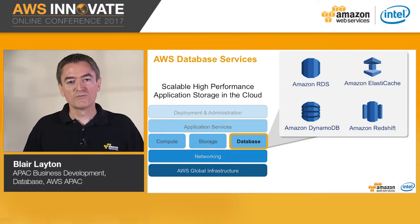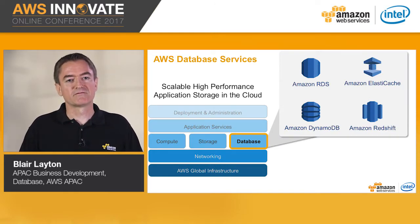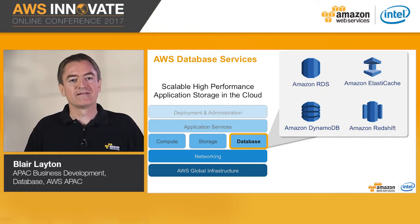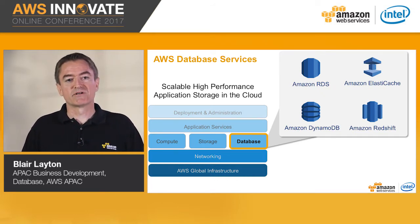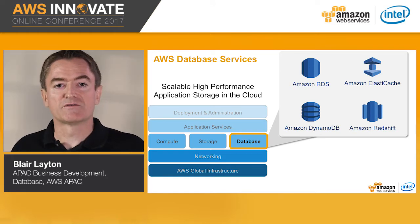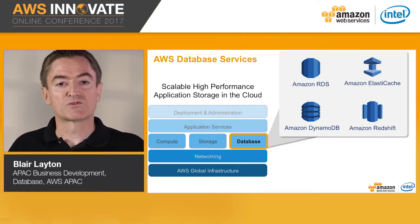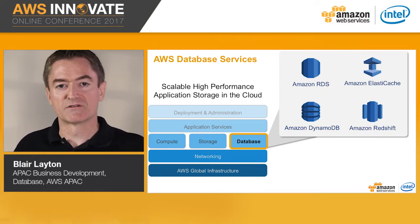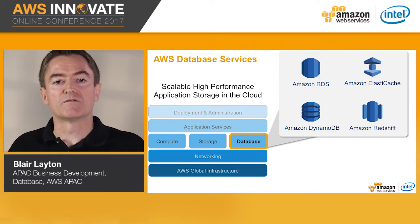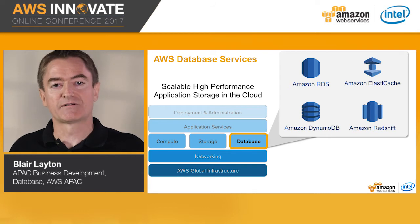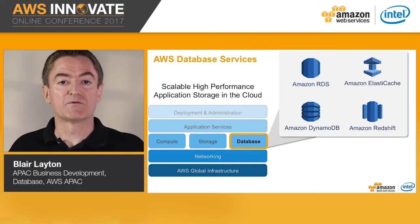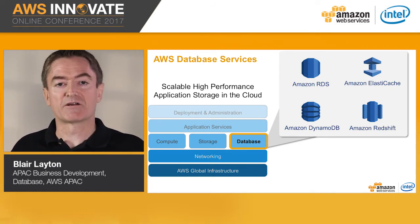AWS consists of our global infrastructure with 16 geographic regions across the world, all interconnected with our network backbone. In each region we have network services such as Virtual Private Cloud and CloudFront. The three main service areas you will typically consume when building applications on AWS are compute, storage and database services. Today we are going to focus on the managed database services: Amazon RDS, Amazon ElastiCache, Amazon DynamoDB, Amazon Redshift, and the AWS Migration Service.